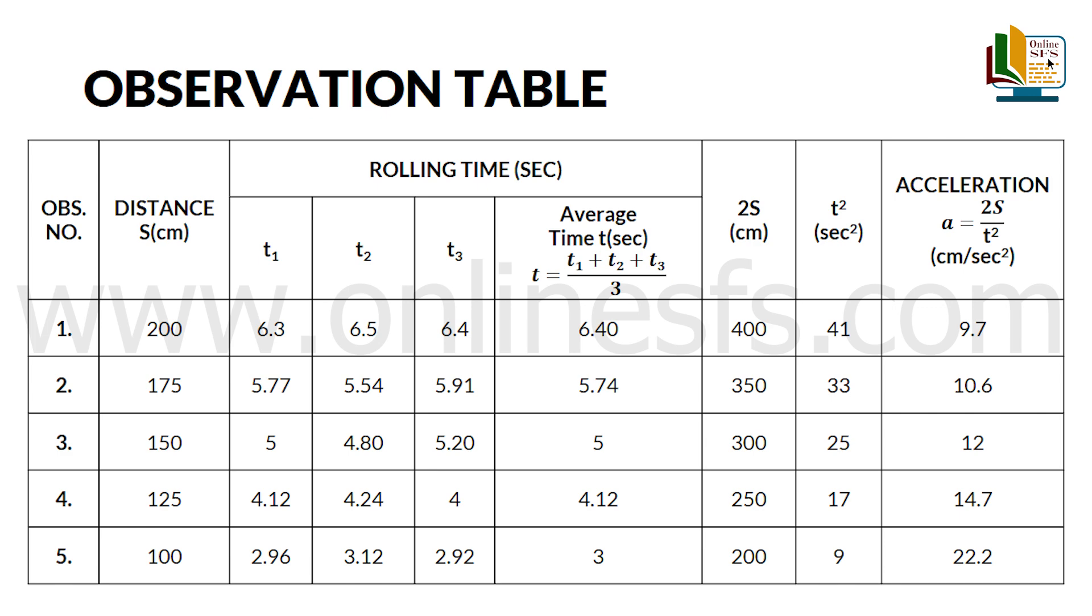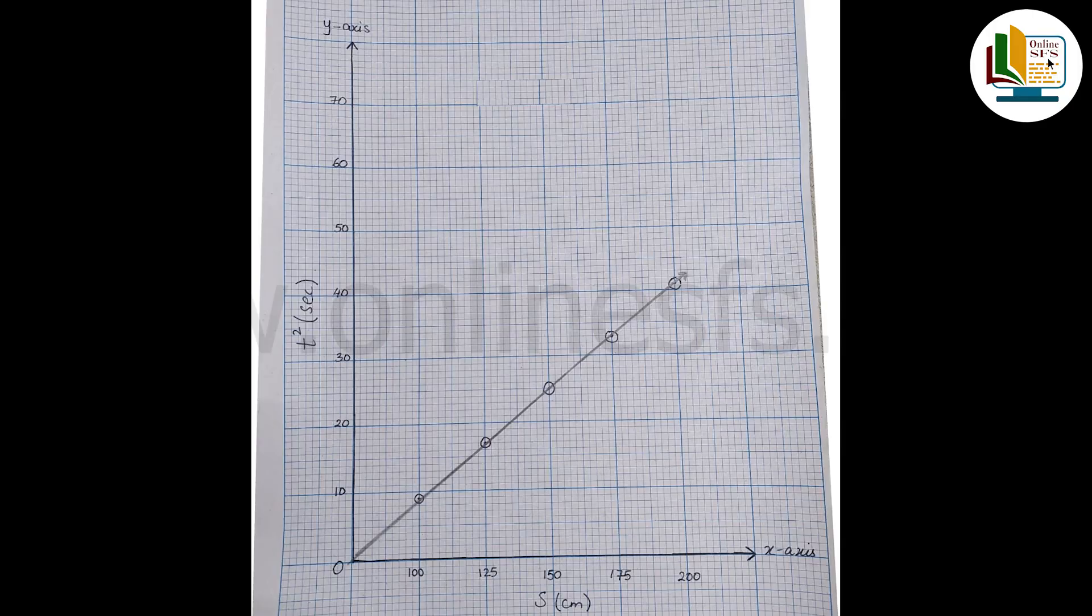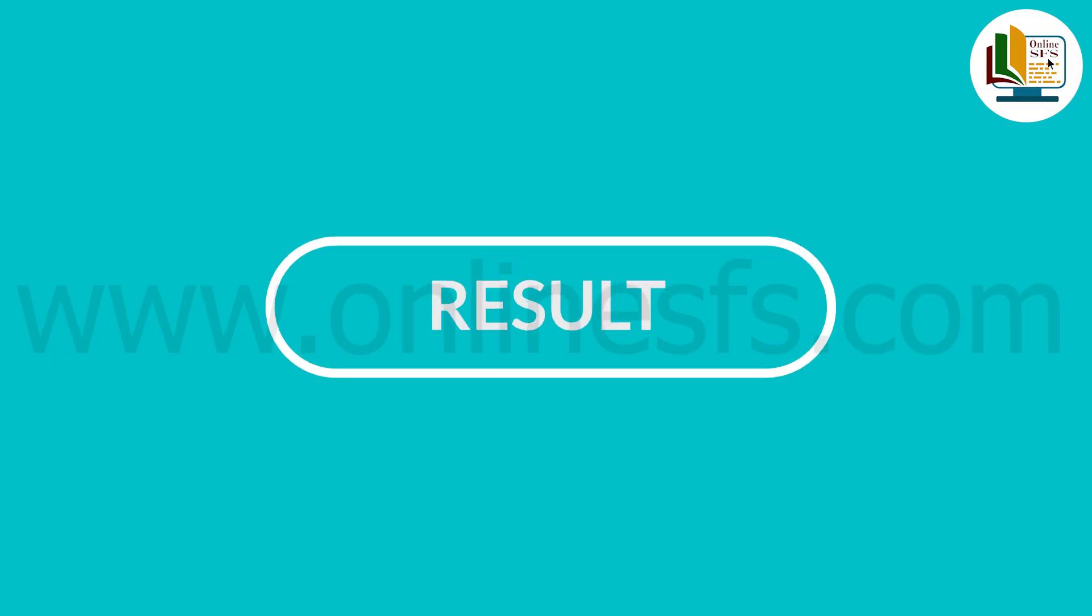Now we will plot a graph between s and t square. We will take s on the x-axis and t square on y-axis taking a suitable scale. After plotting the graph, you can see that it is a straight line which shows that s is directly proportional to t square.